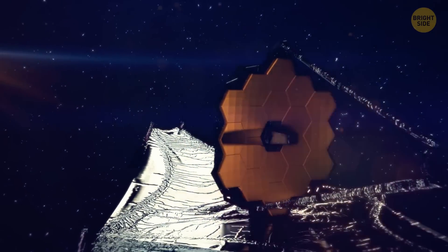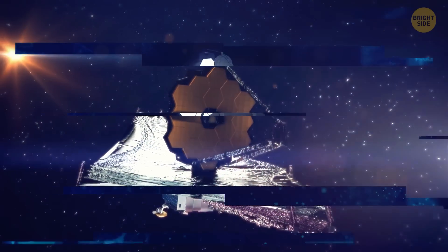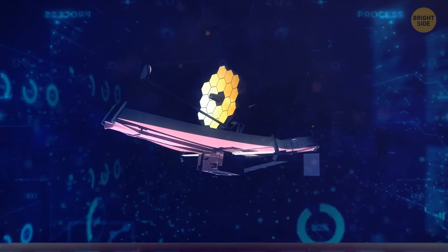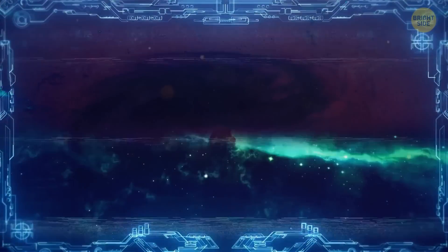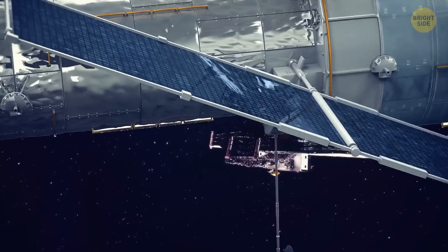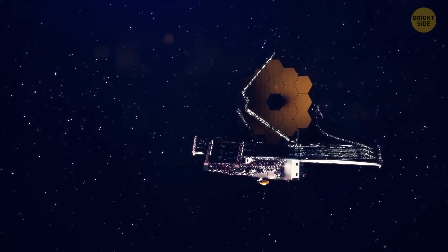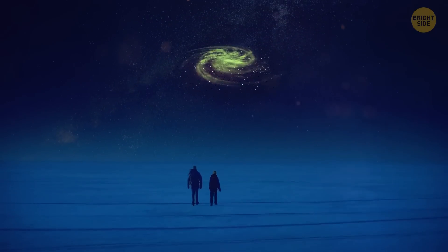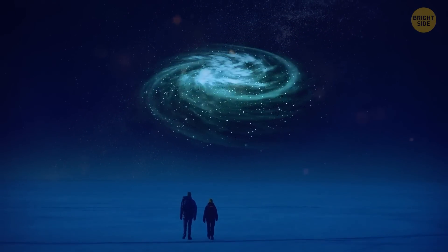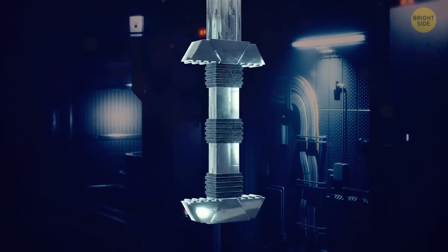The James Webb Space Telescope, the new cool guy on the space block, just has some serious skills. It can see through dust clouds with its infrared vision and spot galaxies that were previously invisible. Move over Hubble. There's a new stargazer in town. But why has it shaken things up so much? Because this discovery affects our understanding of how galaxies formed.